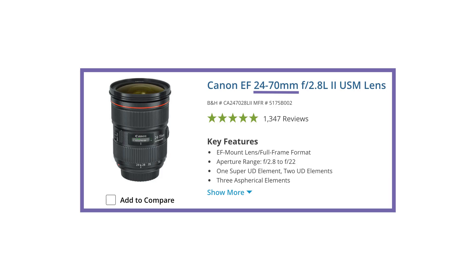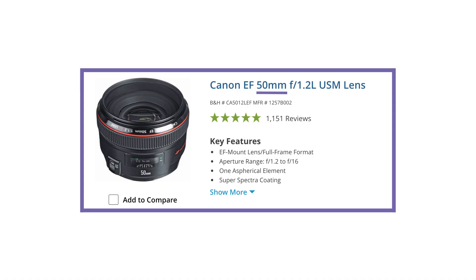The numbers before the MM are the focal length. If you see a range of numbers, that means you're looking at a zoom lens and the numbers are letting you know how wide the lens can be and how zoomed in the lens can be. If you only see one number, then that means it's a prime lens and that means it has a fixed focal length.